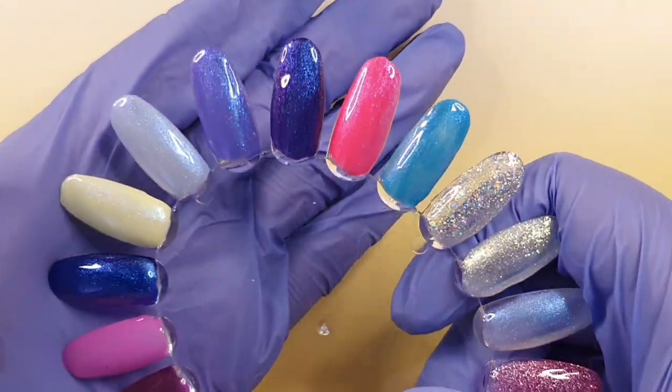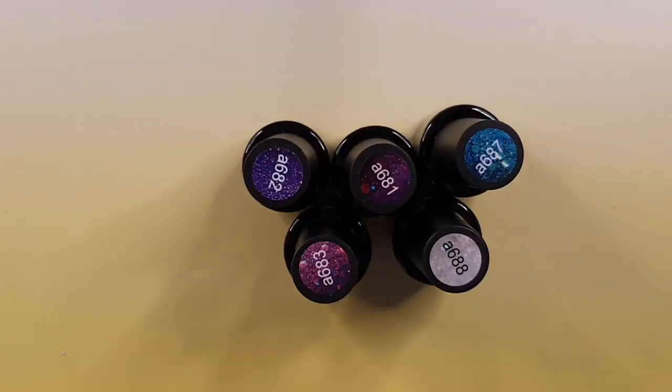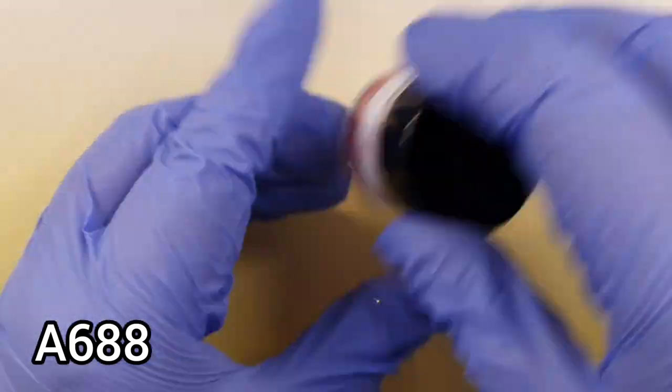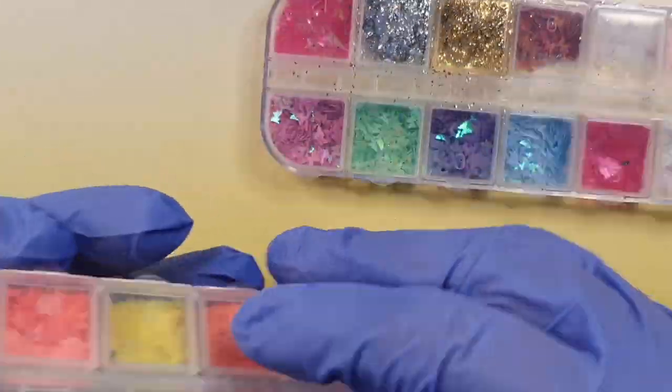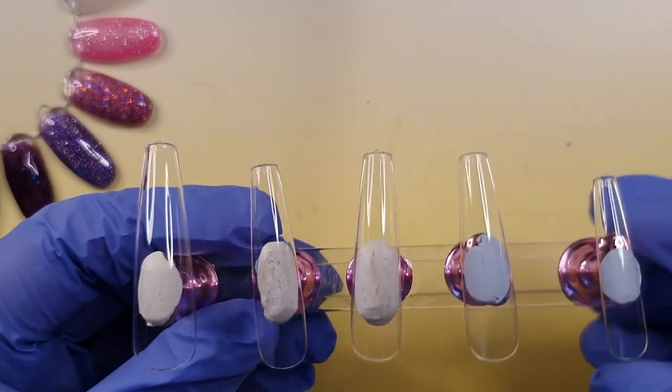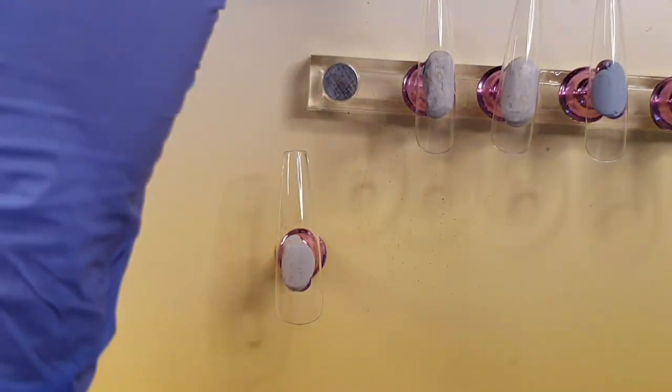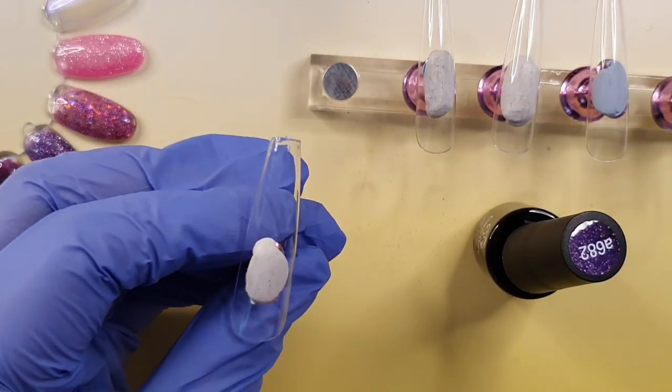That white iridescent color, the A668 I think it is, that one is a topper as well so you can put it on top of colors which is great. And it just makes these gel polishes even better. So I do use Makartt's iridescent white glitter and I also use different butterflies as well from different kits that I have received.